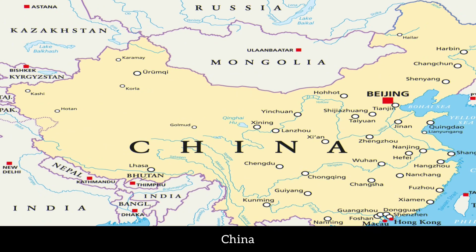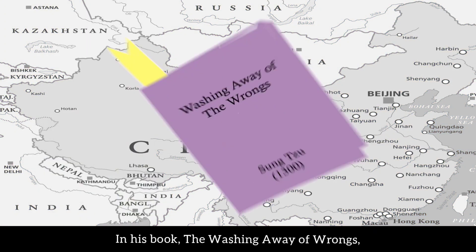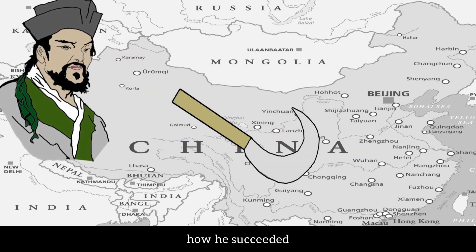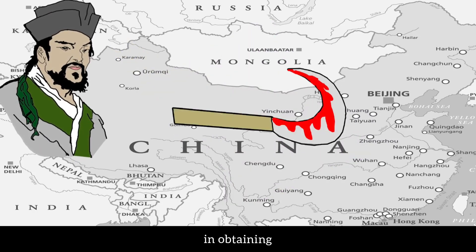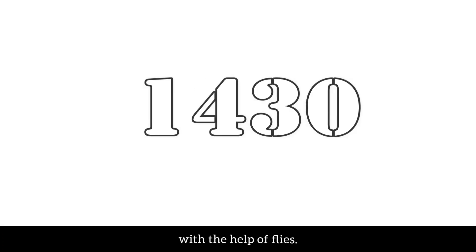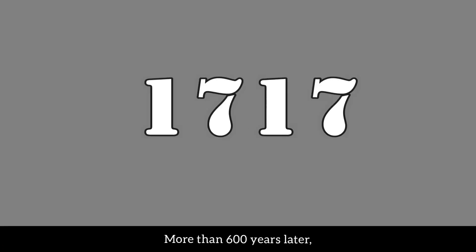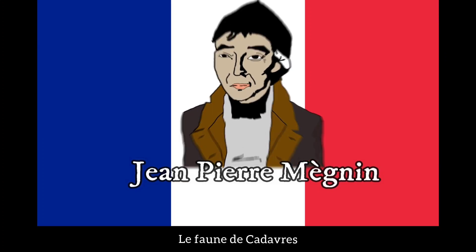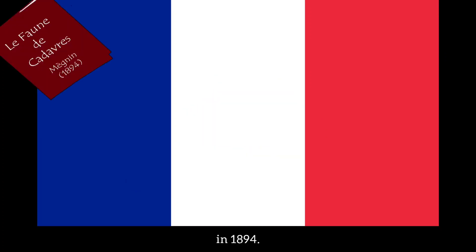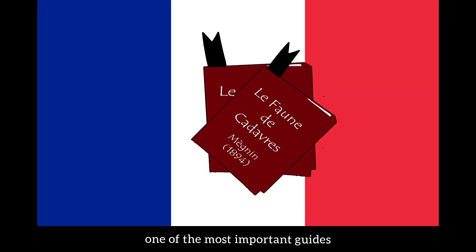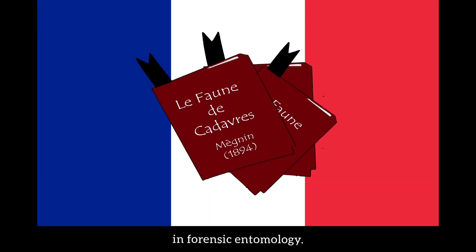But when did it all start? It began in 13th century China with Sung Tzu. In his book 'The Washing Away of Wrongs,' Tzu recounts how he succeeded in obtaining a murderous confession with the help of flies. More than 600 years later, a French entomologist named Megnin published a book called 'La Faune des Cadavres' in 1894.